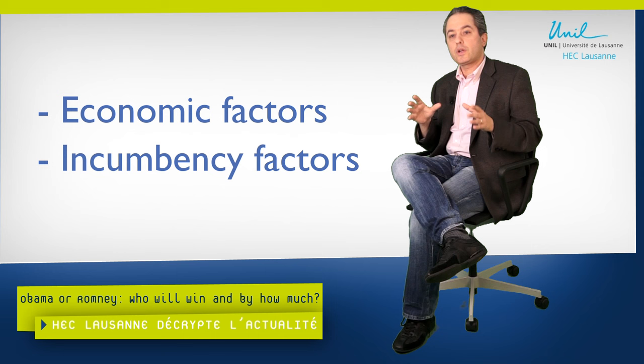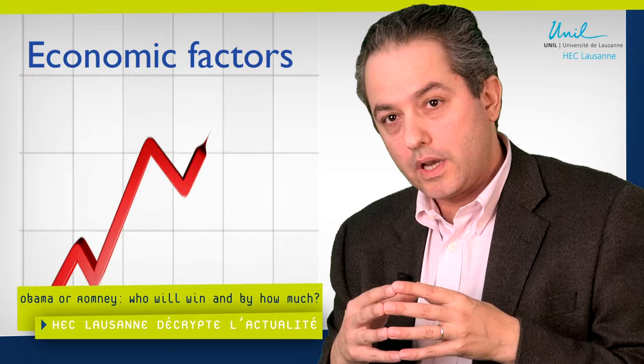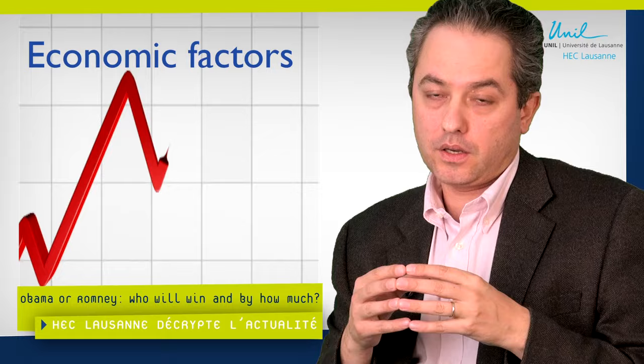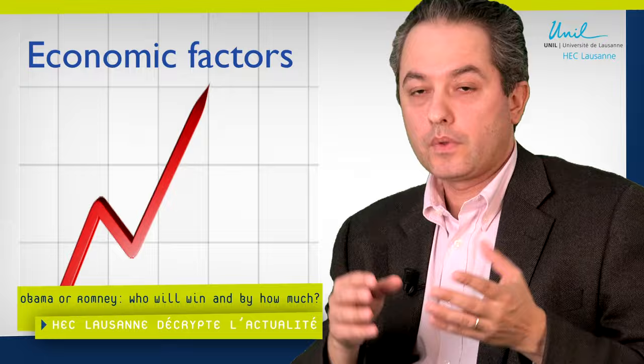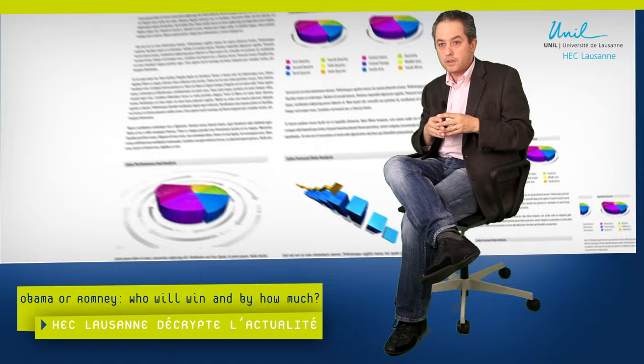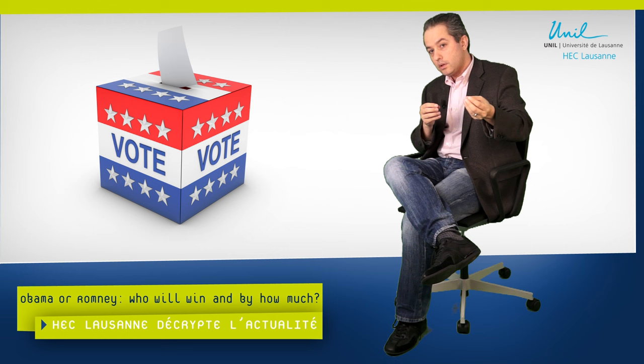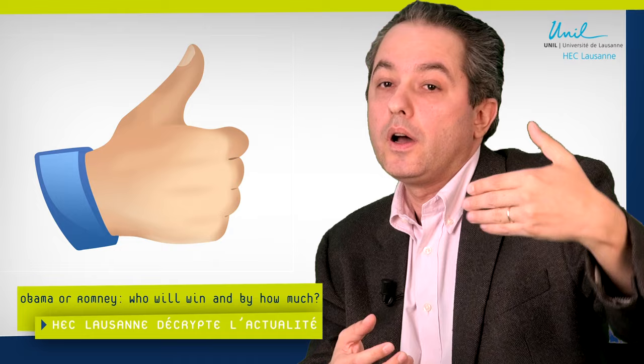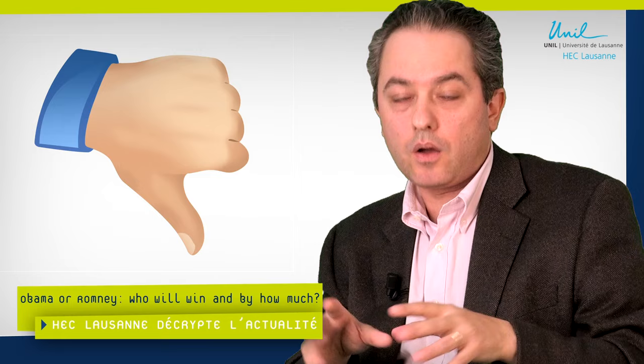In our model, we first take into account economic factors and incumbency factors. This part of the model is based on Raymond Fair, who is an economist at Yale University. He proposed the model wherein economic factors are used to predict how the voters are going to react. It's a very basic model. What the model does is it looks at the state of the economy, inflation rate, GDP growth rate — long term and current — and then predicts the extent to which voters are going to reward or punish the incumbent party. If things are going well, voters are likely to reward the party or the incumbent by giving them a mandate to serve again as president. If things are going badly, they will punish the incumbent or the party of the incumbent. That's how the economic factors play into the picture.